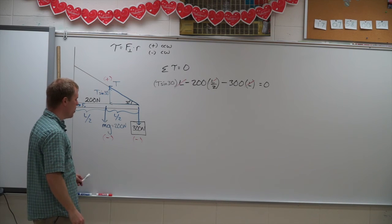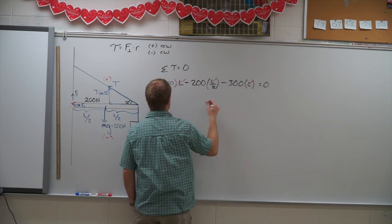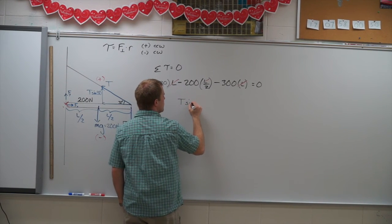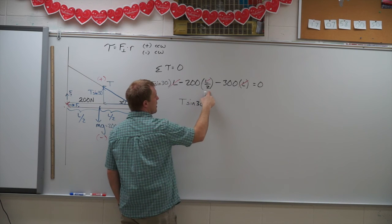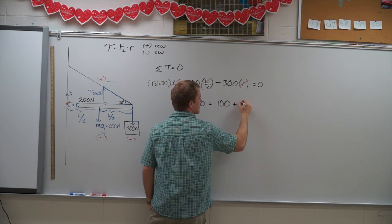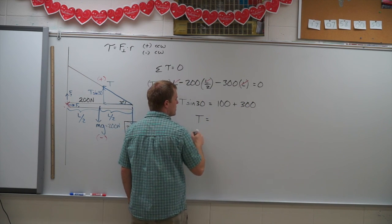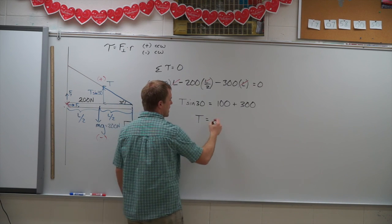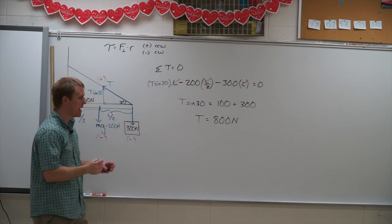Okay. With that said, I can now go ahead and solve for T. So I'm going to move these two over to the other side. So I have T sine 30 equals 200 divided by 2 is 100. So I have 100, move the 300 over, plus 300. So I have 400 divided by the sine of 30. Sine of 30 is a half, so I get 800 Newtons will be the tension in my cable.